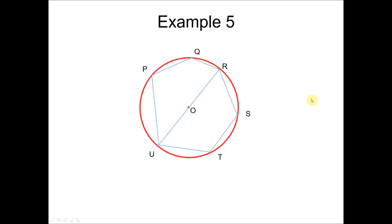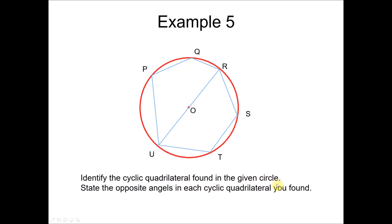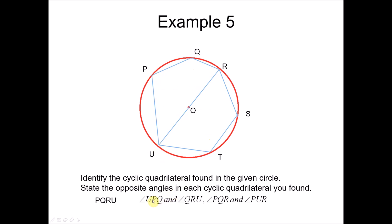Now in example five, identify the cyclic quadrilaterals in the given circle. The first cyclic quadrilateral is PQRU. In this quadrilateral, the opposite angles are angle QPU and angle QRU — these two form a pair of opposite angles. The second pair is angle PQR and angle PUR.